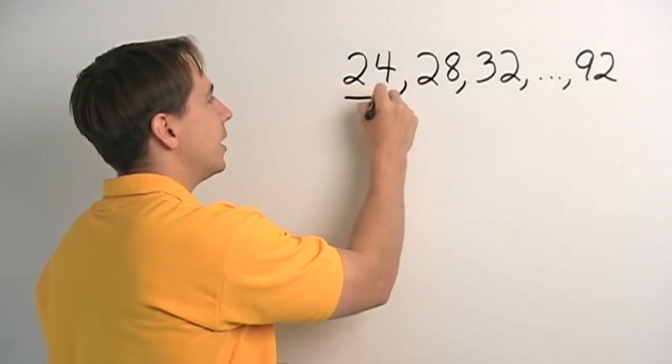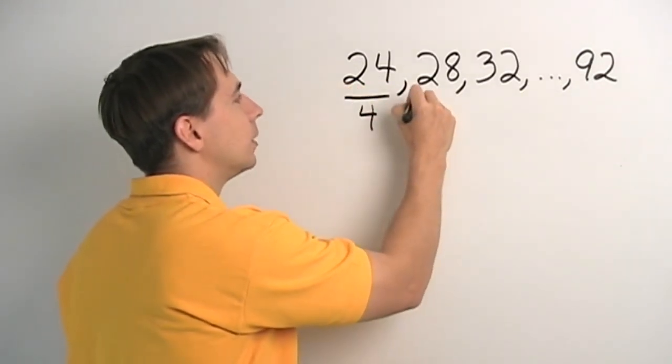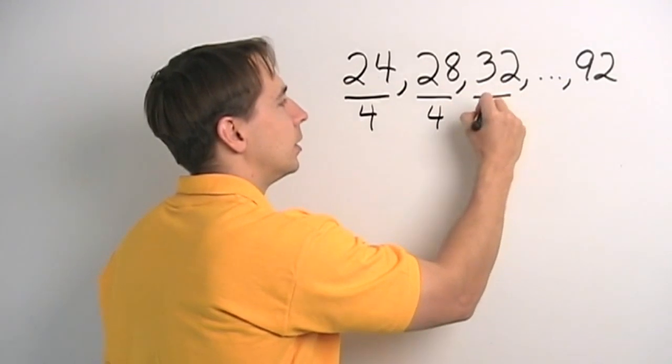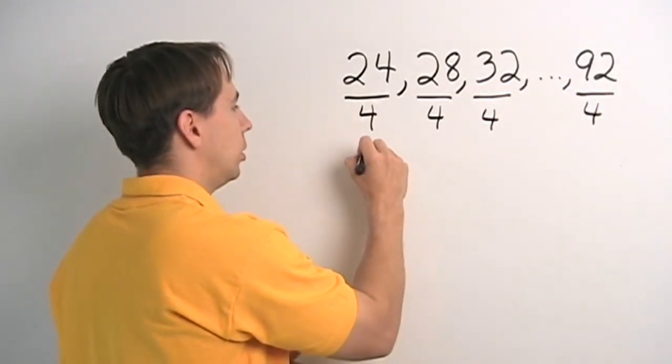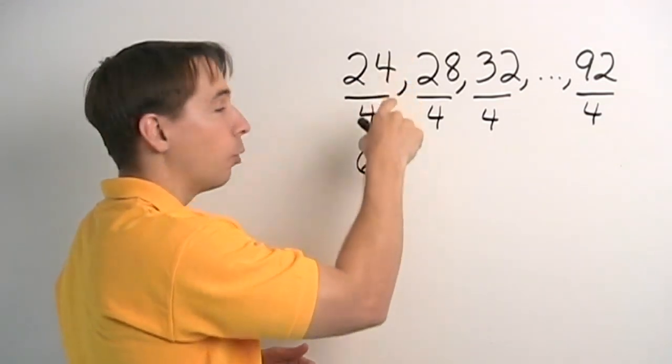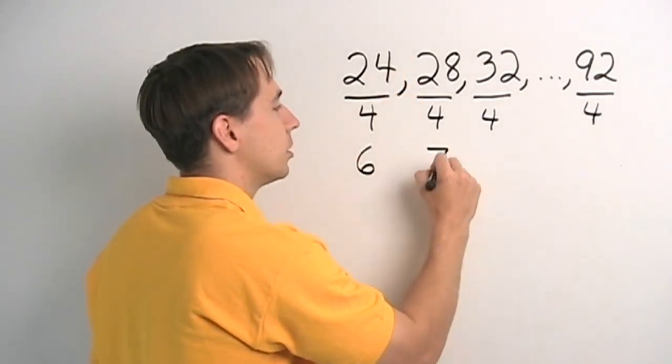So, let's divide each of these numbers by 4. And look what we're doing here. By dividing by 4, we're making our gaps that were 4, we're turning them into gaps of just 1.